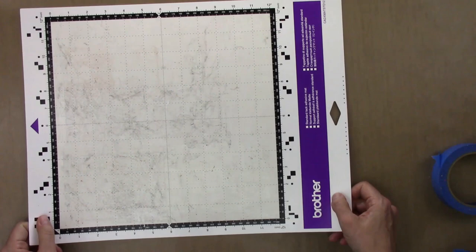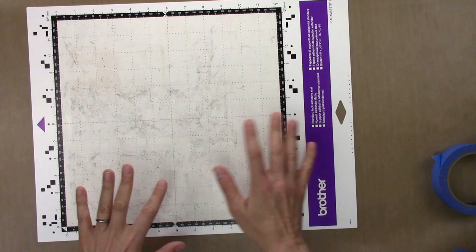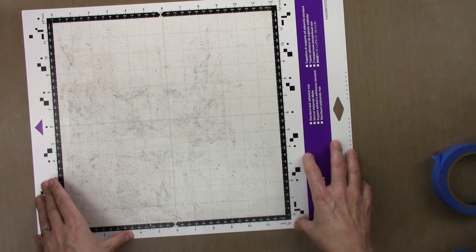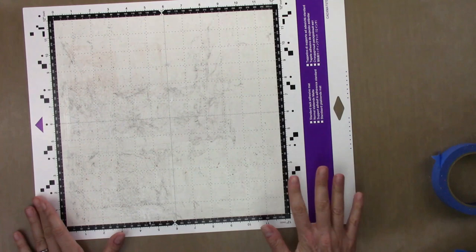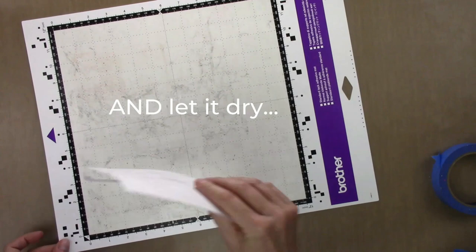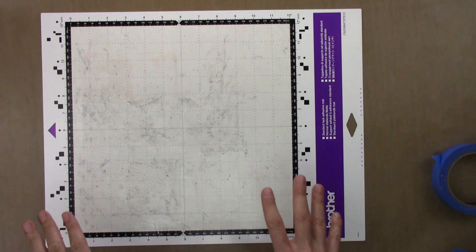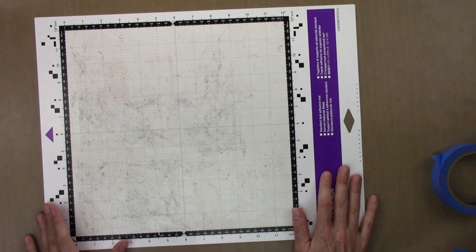A couple things to think about for the different kinds of mats: For a light tack adhesive mat, once you've applied one coat, I would check it with a little piece of copy paper in the corner. If it takes a little bit to peel it off, it's probably about right for standard tack, but that's probably too sticky for a light tack mat. In that case, take a white cotton t-shirt, press it lightly on the mat, and peel it away. That'll take some of the stick off and turn it into more of a light tack mat.